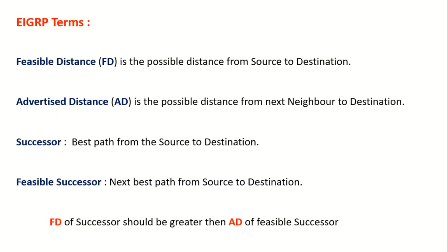The main EIGRP terms are: FD (feasible distance), AD (advertised distance), successor, and feasible successor. Feasible distance is the total distance from the source to the destination. Advertised distance is the distance from the neighbor to the destination. Successor is the best path from the source to the destination, and feasible successor is the next best path from the source to the destination.